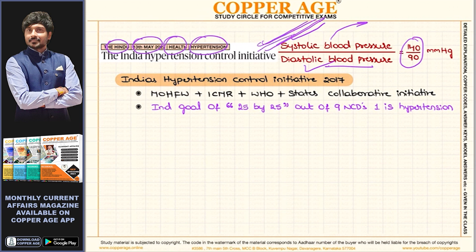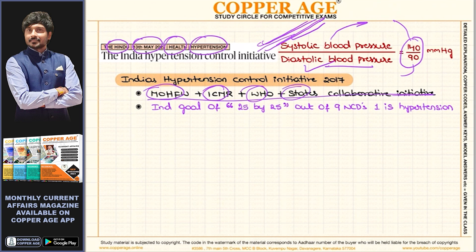In India, the hypertension control initiative started in 2017. The Ministry of Health and Family Welfare, Indian Council of Medical Research, WHO, and states started a collaborative action. India has a goal related to non-communicable diseases — the 25 by 25 goal.